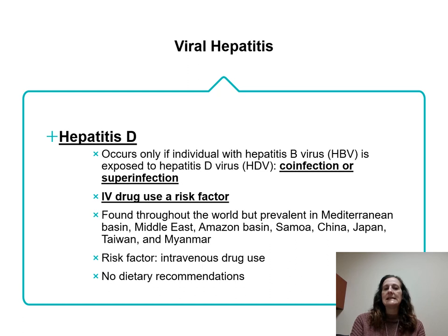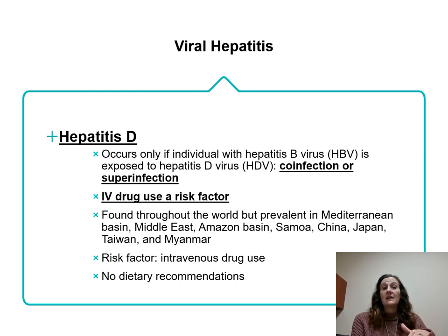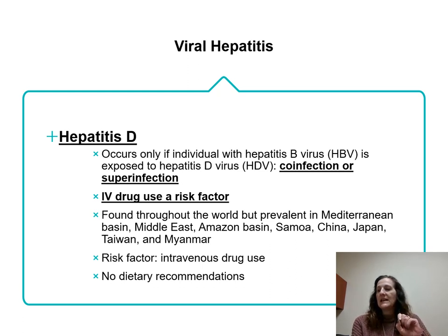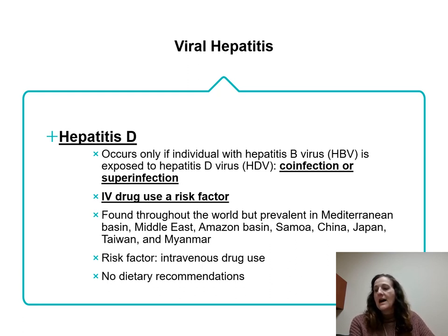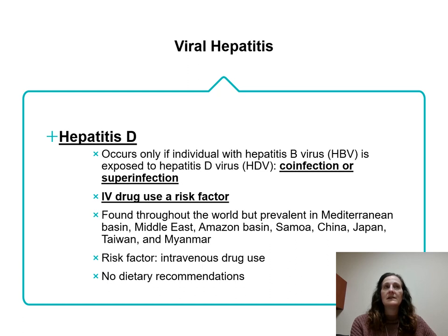Hepatitis D is called a co-infection or super-infection because only patients with hepatitis B can be exposed to hepatitis D — so B and D go together. IV drug abuse is typically a risk factor. Hepatitis D is prevalent in Mediterranean countries such as Italy, Greece, France, and Turkey, as well as the Middle East, the Amazon basin, and Asian countries including China, Japan, Taiwan, and Myanmar.